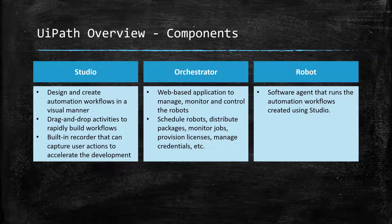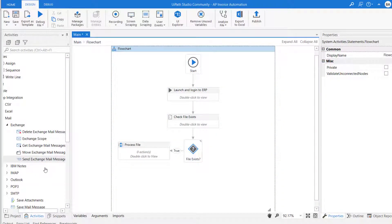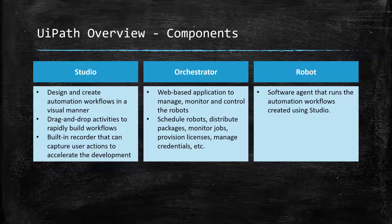The UiPath RPA platform comprises three major components: Studio, Orchestrator, and Robot. Studio lets you design and create automation workflows in a visual manner using simple drag-and-drop activities or the built-in recorder. If you are from a development background, you can compare this to an IDE, just like Visual Studio.